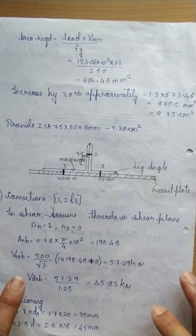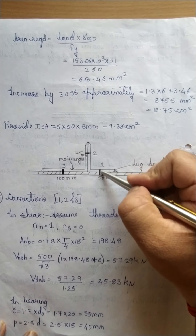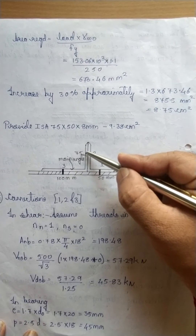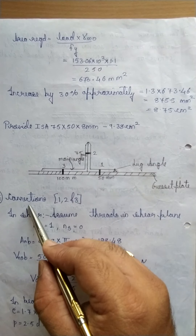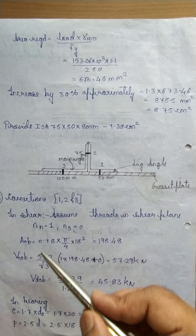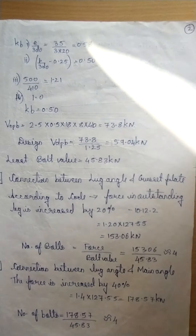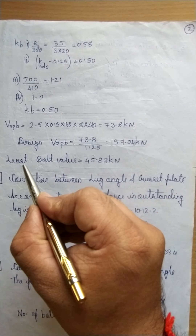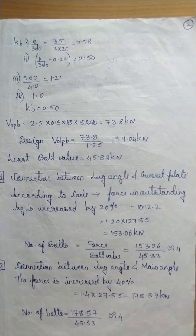Now let us design the three connections: connection between lug angle and gusset plate, lug angle and main angle, and main angle and gusset plate — connections one, two, and three. First, we find the bolt value. The edge distance is calculated, and based on bearing and shear capacity, the bolt value works out to 45.83 kN.